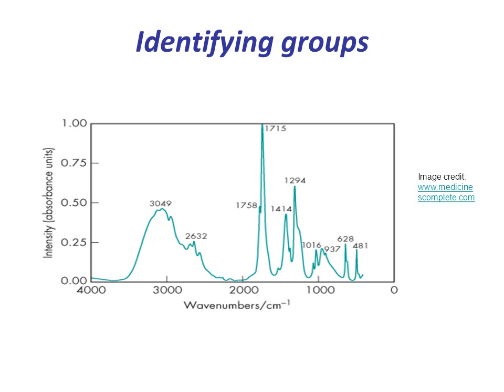As an example of how this works, let's see if we can identify some of the groups present in the unknown IR spectrum we saw earlier. We're going to focus on the region above 1,400 wave numbers, since this is the region that is easiest to assign.